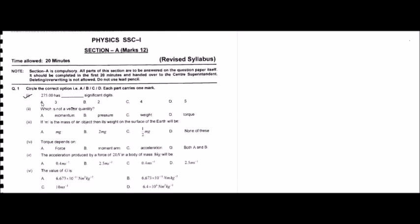Question number one: 275.00 has how many significant digits? To select the correct option, you need to recall the basic rules for finding significant digits. According to the rule, all nonzero digits are significant. In this number, 2, 7, and 5 are nonzero, so they are significant digits.